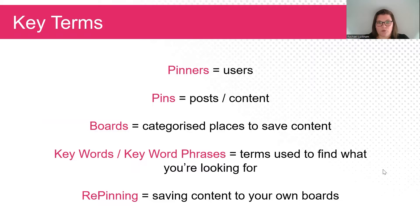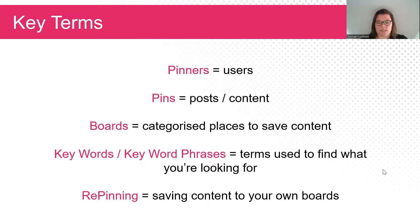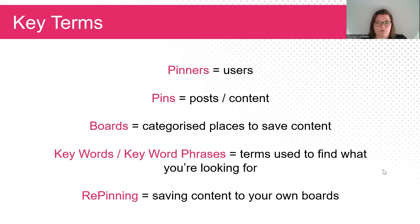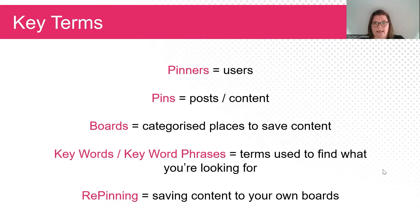So just as a heads up, as we move forward, here are some key terms that you'll need for Pinterest. Users on Pinterest are called pinners. The content or the posts that are being displayed on Pinterest are called pins. The boards, like we just talked about, are the categorized places that you'll save the content you like. Keyword or keyword phrases are the search terms you're using to find content. And repinning refers to you saving other content to your boards within Pinterest — similar to how you might like a tweet or like a photo on Instagram, you're physically saving that to a board so you can refer back to it later.